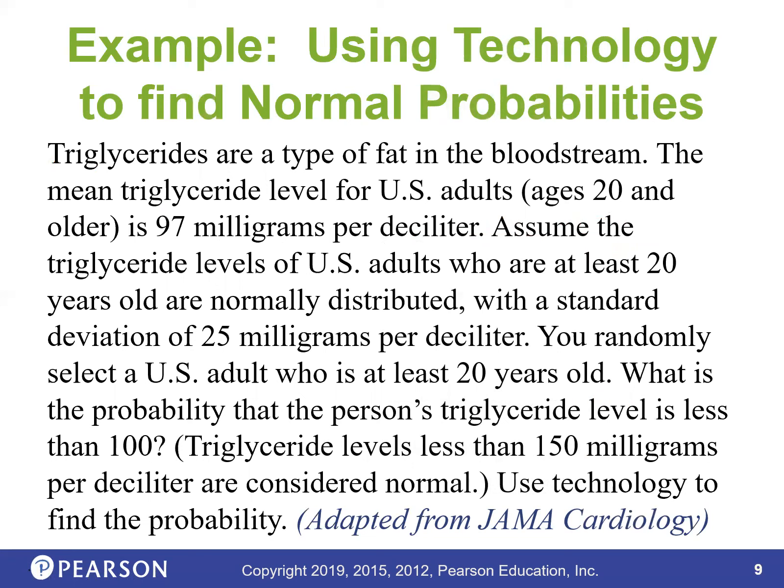Triglycerides are fat in the bloodstream. The average triglycerides level for U.S. adults ages 20 and older is 97 milligrams per deciliter of blood. Assume triglyceride levels are normally distributed with a standard deviation of 25 milligrams per deciliter. A U.S. adult aged at least 20 is randomly selected. What is the probability that a person's triglycerides level is less than 100? Draw out the normal curve and put 97 as your middle.